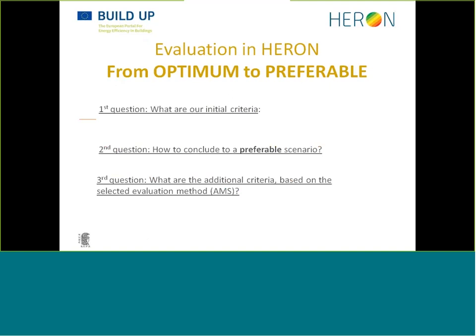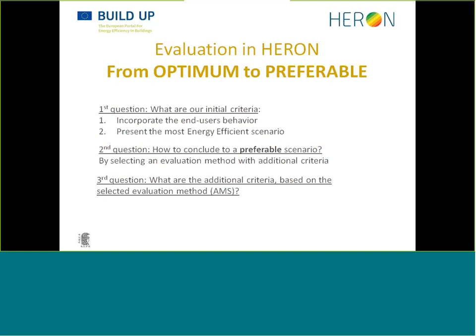We asked ourselves what our initial criteria were: first, to incorporate the end user's behavior in the scenarios depicting the problem; and second, to present the most energy-efficient scenario. But if by just running those scenarios and getting the optimum result we can't get reliable results, what else can we do? We can select an evaluation method that includes additional criteria. In IRON's case, we selected the multi-criteria evaluation method AMS, which gives answer to this question through three additional sub-criteria: environmental performance, political acceptability, and feasibility of implementation.